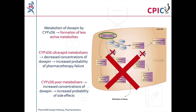In CYP2D6 poor metabolizers, metabolism of doxepine is reduced. This increases the concentrations of doxepine in the body, which increases the probability of side effects.